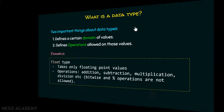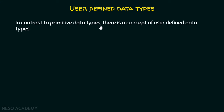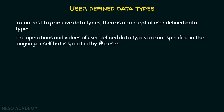Now let's discuss user defined data types. Before moving on to abstract data types, we should understand what a user defined data type is. In contrast to primitive data types like integer, character, and float, the operations and values of user defined data types are not specified in the language itself but are specified by the user — it is not predefined in the language.